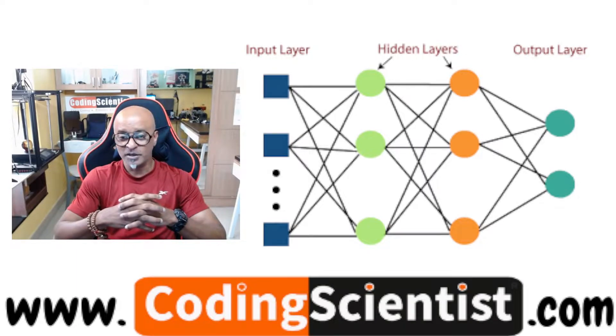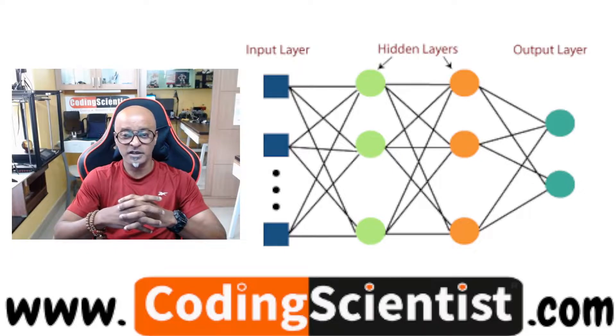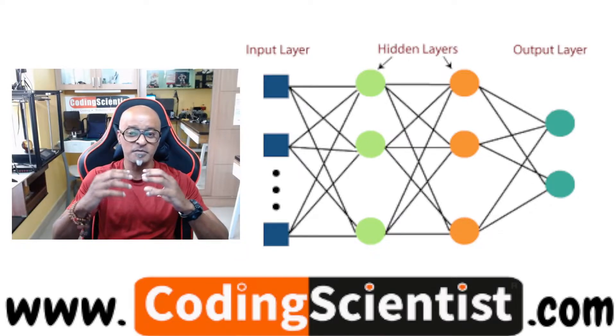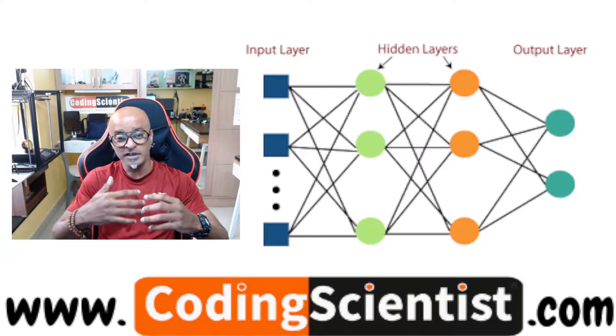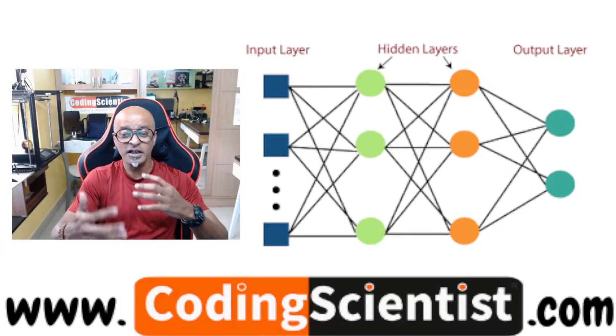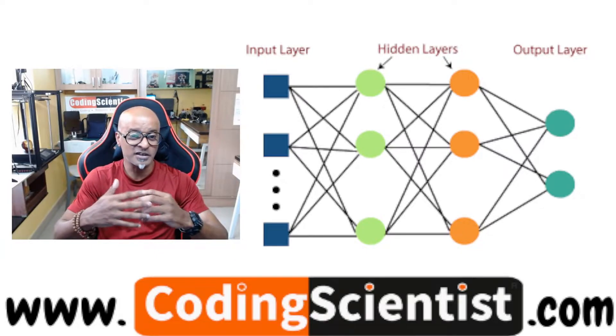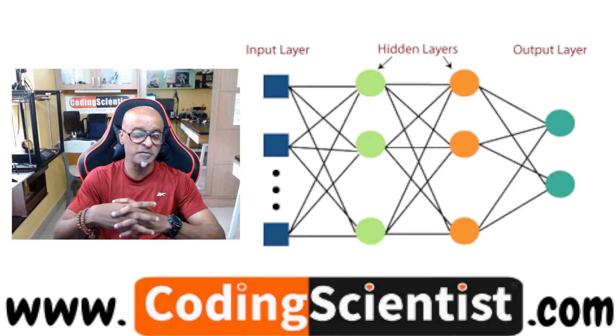Multi-Layer Perceptron is basically a feed-forward artificial neural network that generates a set of outputs from a set of inputs. MLP is characterized by several layers of input nodes connected as a directed graph between the input and output layers.